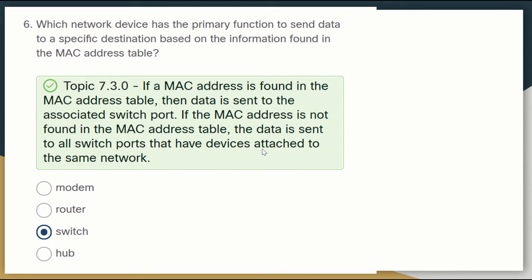Question six: which network device has the primary function of sending data to a specific destination based on information in the MAC address table? Again, the answer is the switch. If the MAC address is found in the MAC address table, the data is sent to the associated switch port. If the MAC address is not found, the data is sent to all switch ports that have devices attached to the same network.